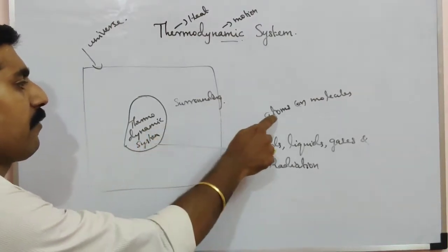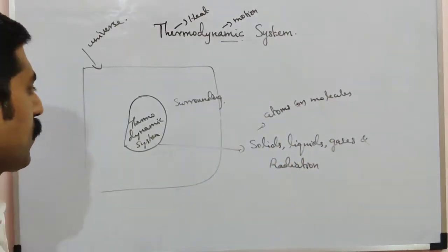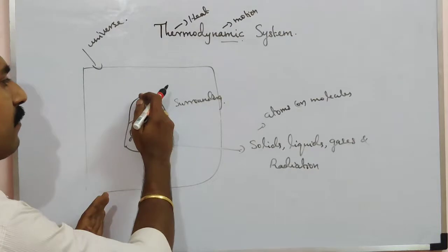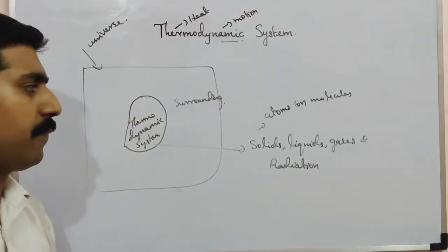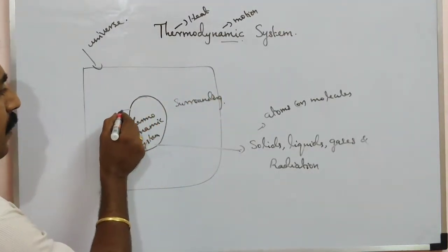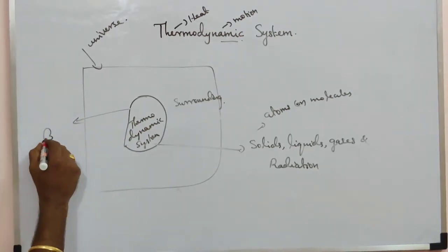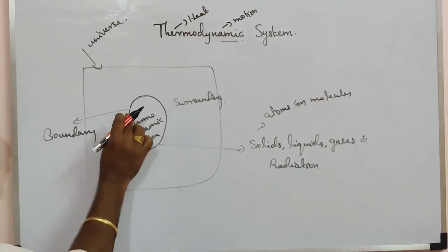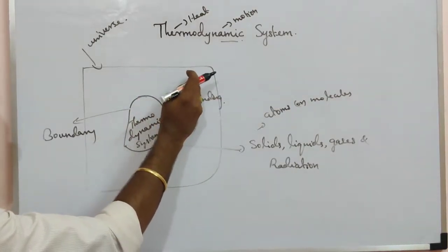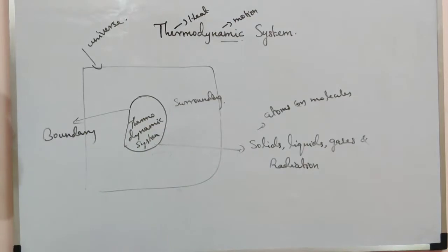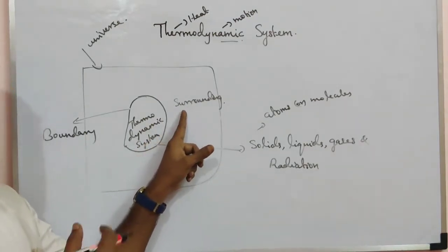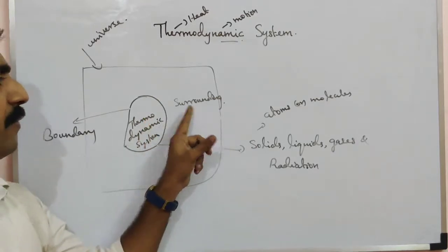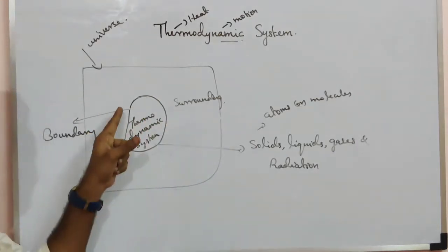In our system, atoms or molecules are present. There is a boundary — this boundary is used to separate the surrounding from the thermodynamic system, or to separate the thermodynamic system from the surrounding.